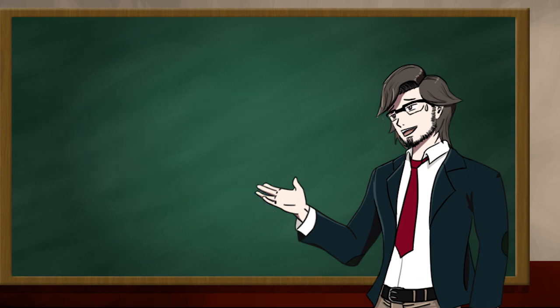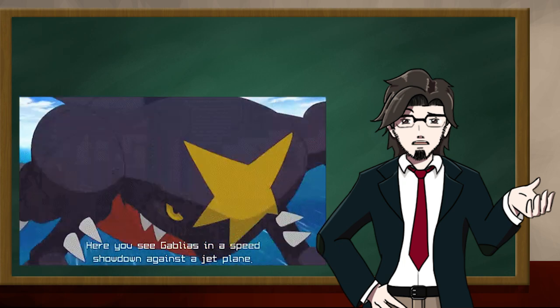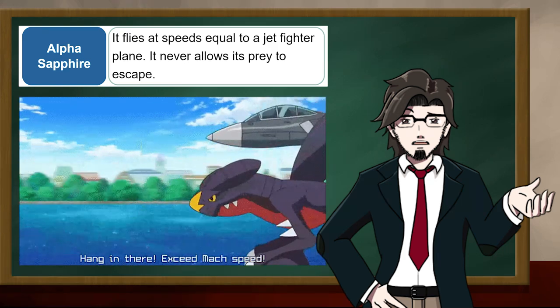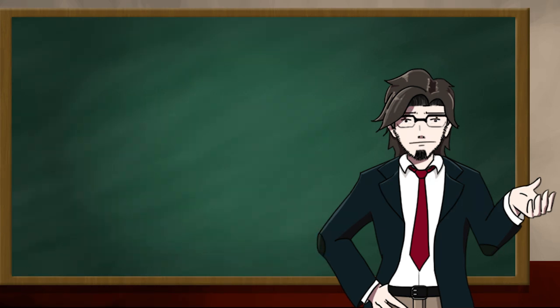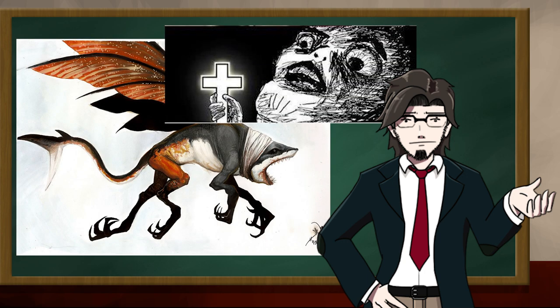What makes this thing even more menacing is that the goddamn thing flies. In Omega Ruby and Alpha Sapphire, its Pokedex entry states, it flies at speeds equal to a jet fighter plane. It never allows its prey to escape. If you thought sharks were scary, try giving it legs and the ability to fly. Mother Nature is a different type of scary in the Pokemon world.